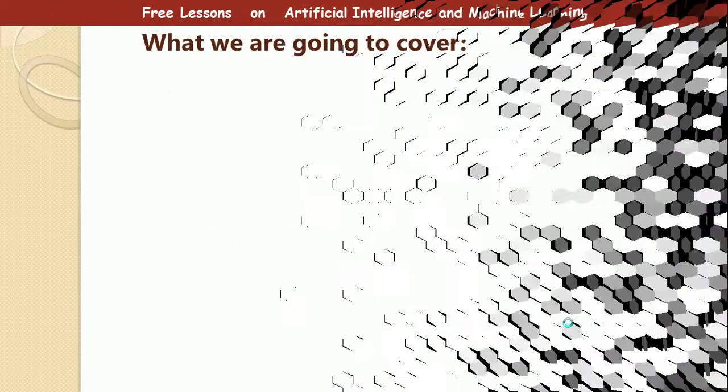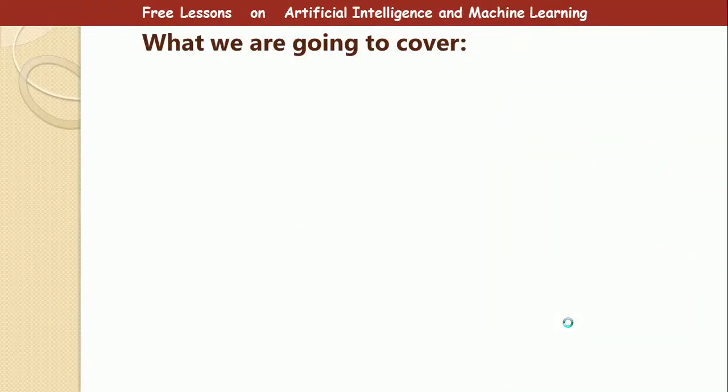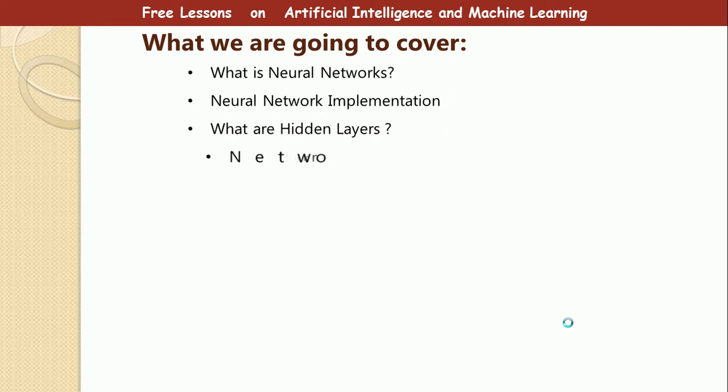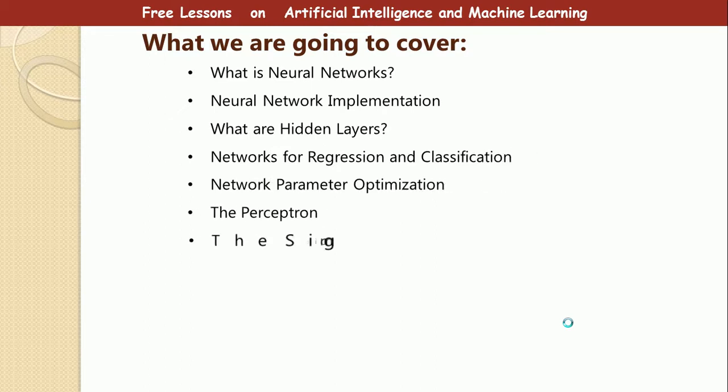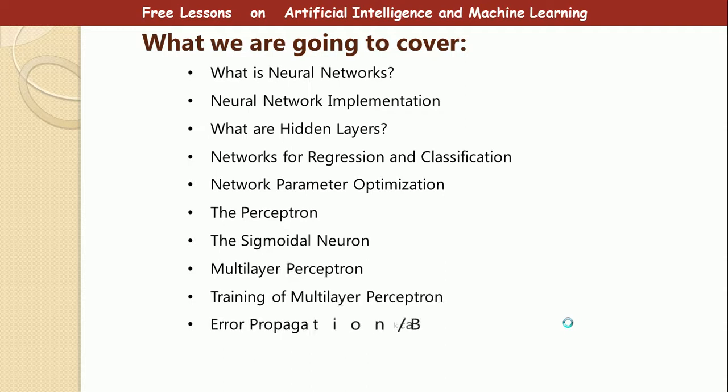Alright, so what are we going to cover today? In about 10 to 15 minutes, we are going to cover the following topics: What is neural network? Neural network implementation. What are hidden layers? Networks for regression and classification. Network parameter optimization. The perceptron. The sigmoidal neuron. Multi-layer perceptron.